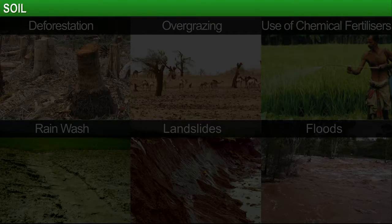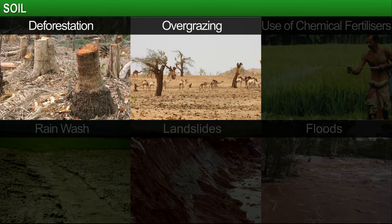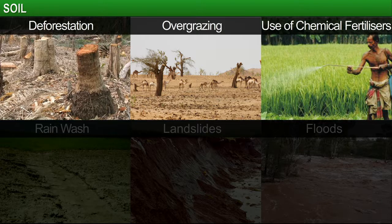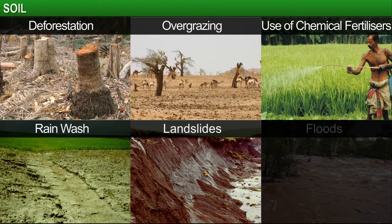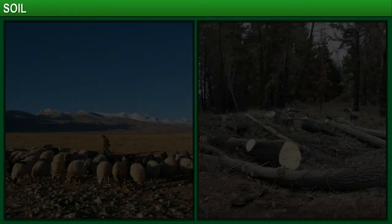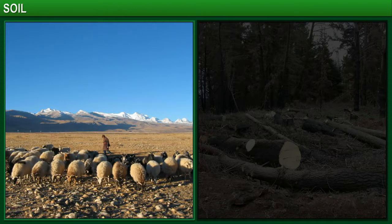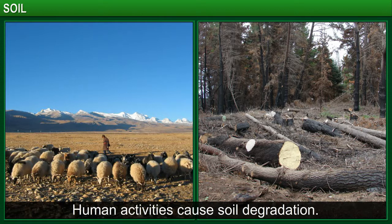Soil degradation is caused by deforestation, overgrazing, excessive use of chemical fertilizers and pesticides, rainwash, landslides and floods. For example, one of the main reasons for the lack of fertile soil in Afghanistan is overgrazing. In Iran, trees were cut down for timber and fuel and were not replaced. This has led to widespread degradation of soil.